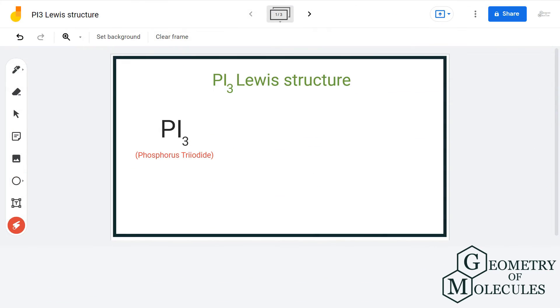Hello guys, welcome back to our channel. In this video, we will discuss the Lewis structure of PI3, which is the chemical formula of Phosphorus triiodide.